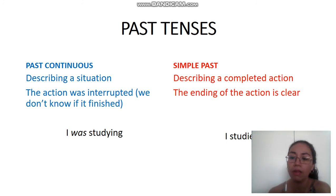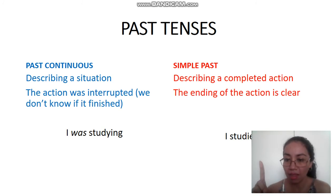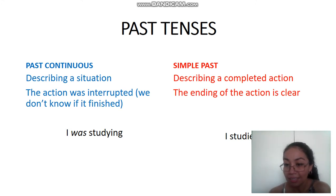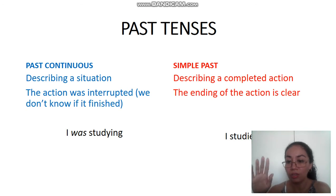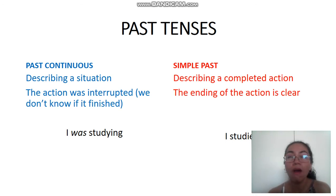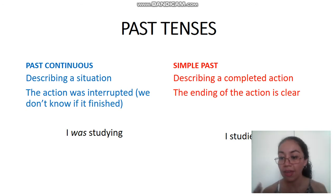In Spanish, this corresponds to 'estaba estudiando,' 'estaba trabajando,' etc. The simple past we use when the action is complete and the end is clear. For example, 'I studied' implies that I finished. If you say 'I watched a movie,' that means you finished watching. But if you say 'I was watching a movie,' that probably implies you didn't get to finish it.